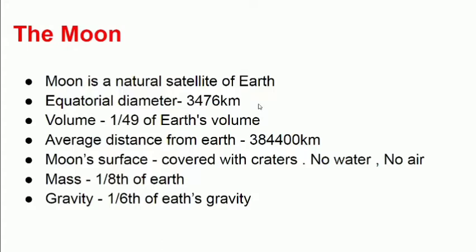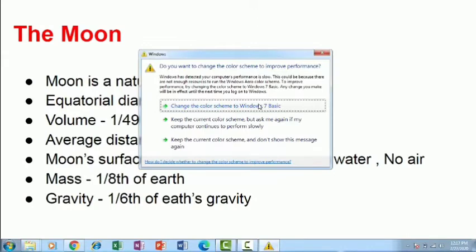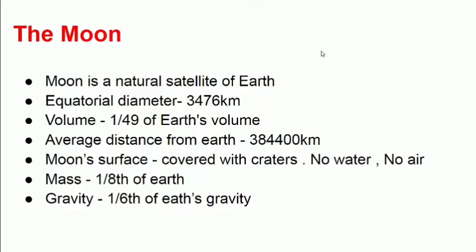The moon's surface is covered with craters, loffy mountains, and a rough surface. There is no atmosphere on the moon. If there were an atmosphere, we would be living on the moon instead of the earth.